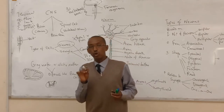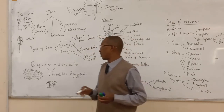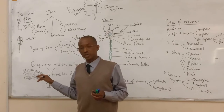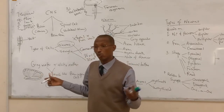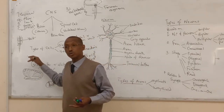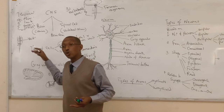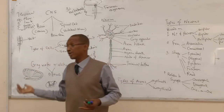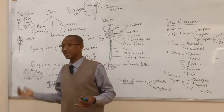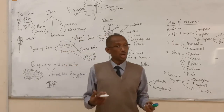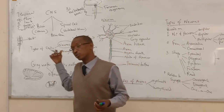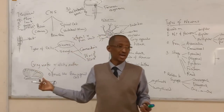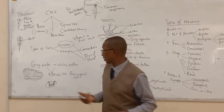The cerebellum, which is our small brain, follows the same arrangement as the larger cerebral hemisphere: gray matter is on the outside and white matter is on the inside. So both the cerebral hemispheres and the cerebellar hemispheres share the same pattern of gray matter outside and white matter inside.